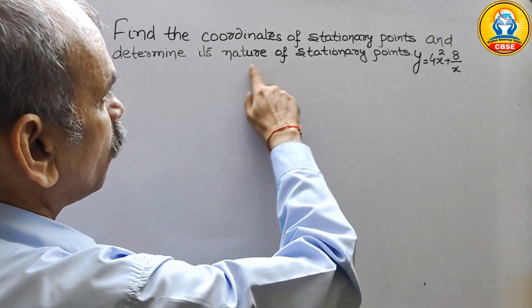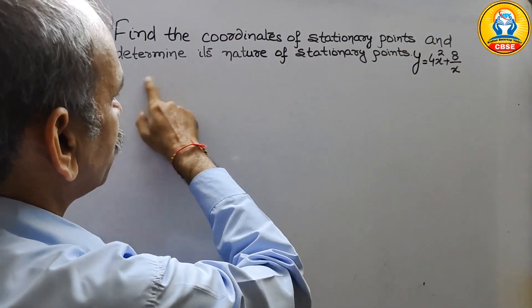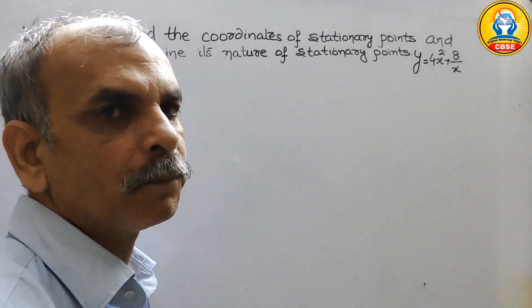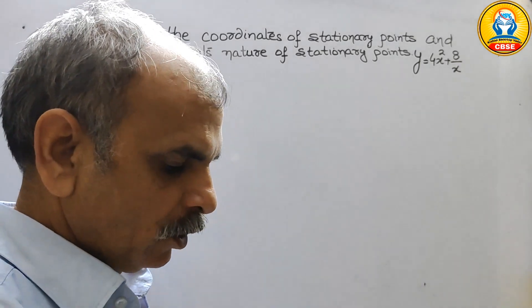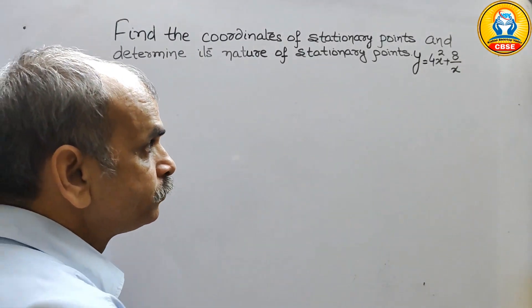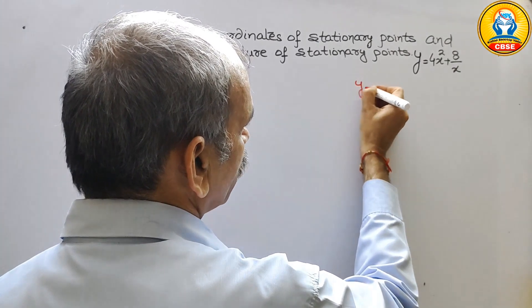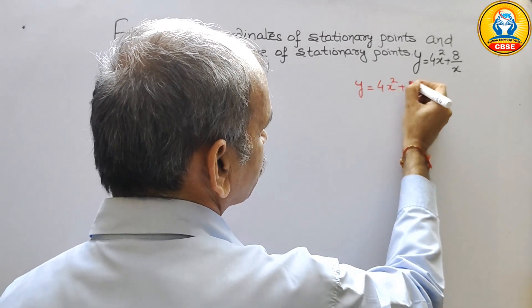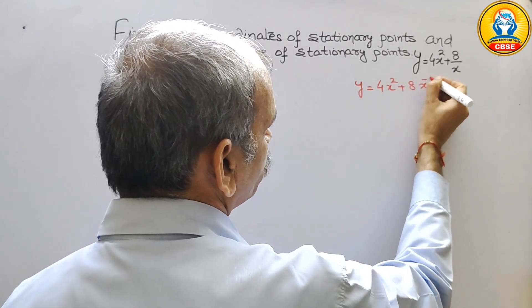Your question is find the coordinates of stationary points and determine its nature of stationary points. y is equal to 4x square plus 8 by x. So first we will rewrite it. That is nothing but y is equal to 4x square plus 8x to the power of minus 1.